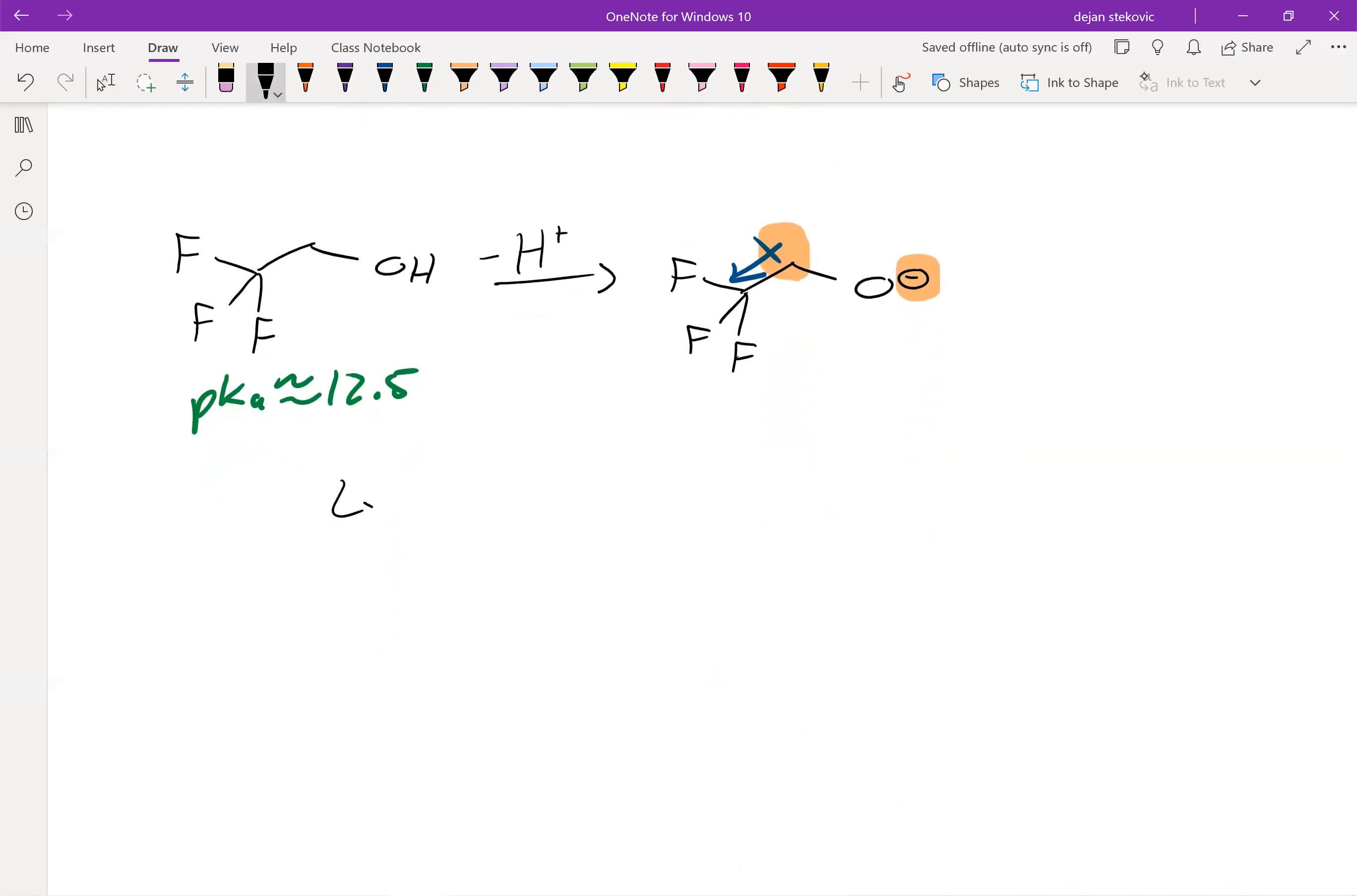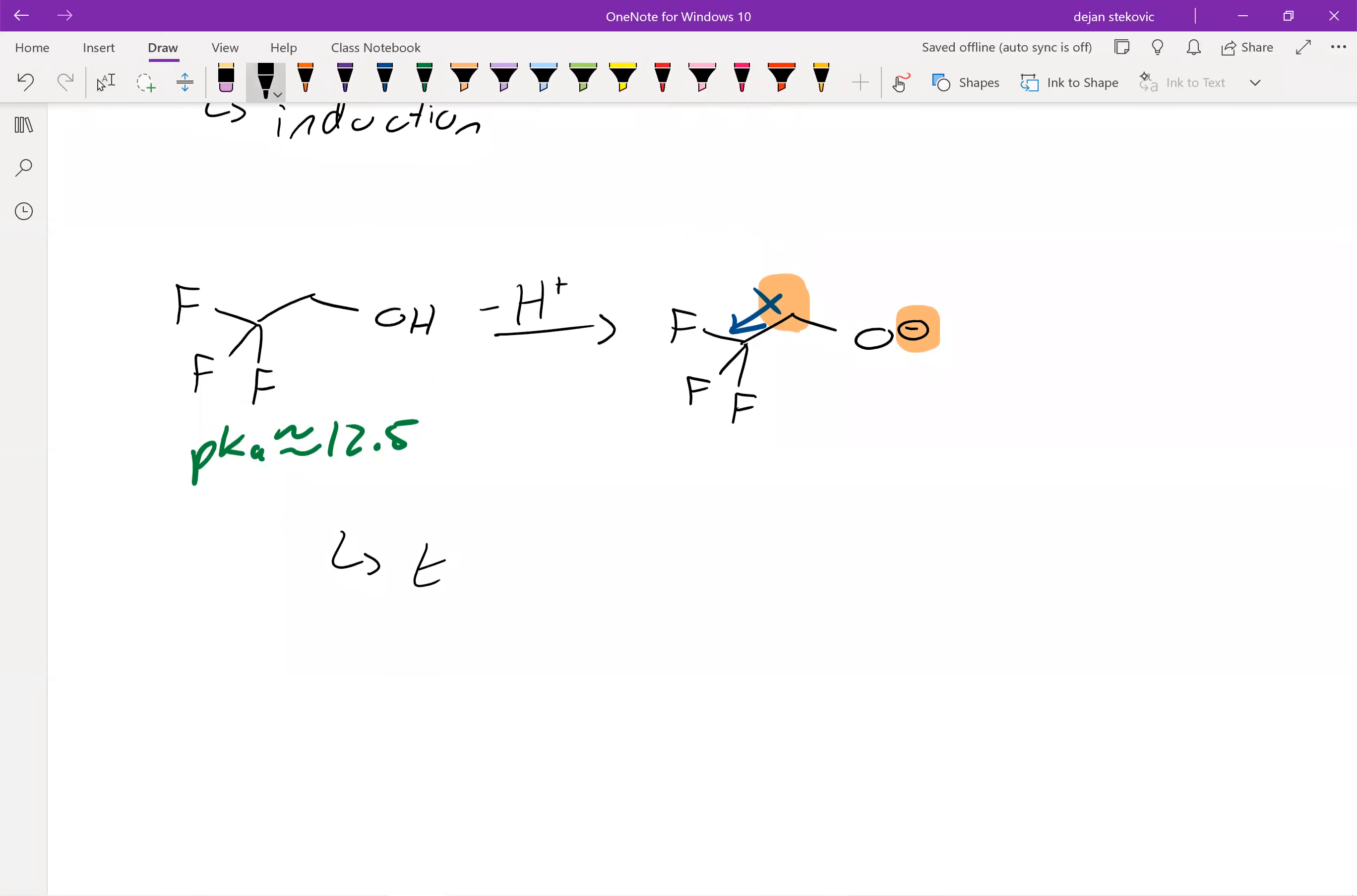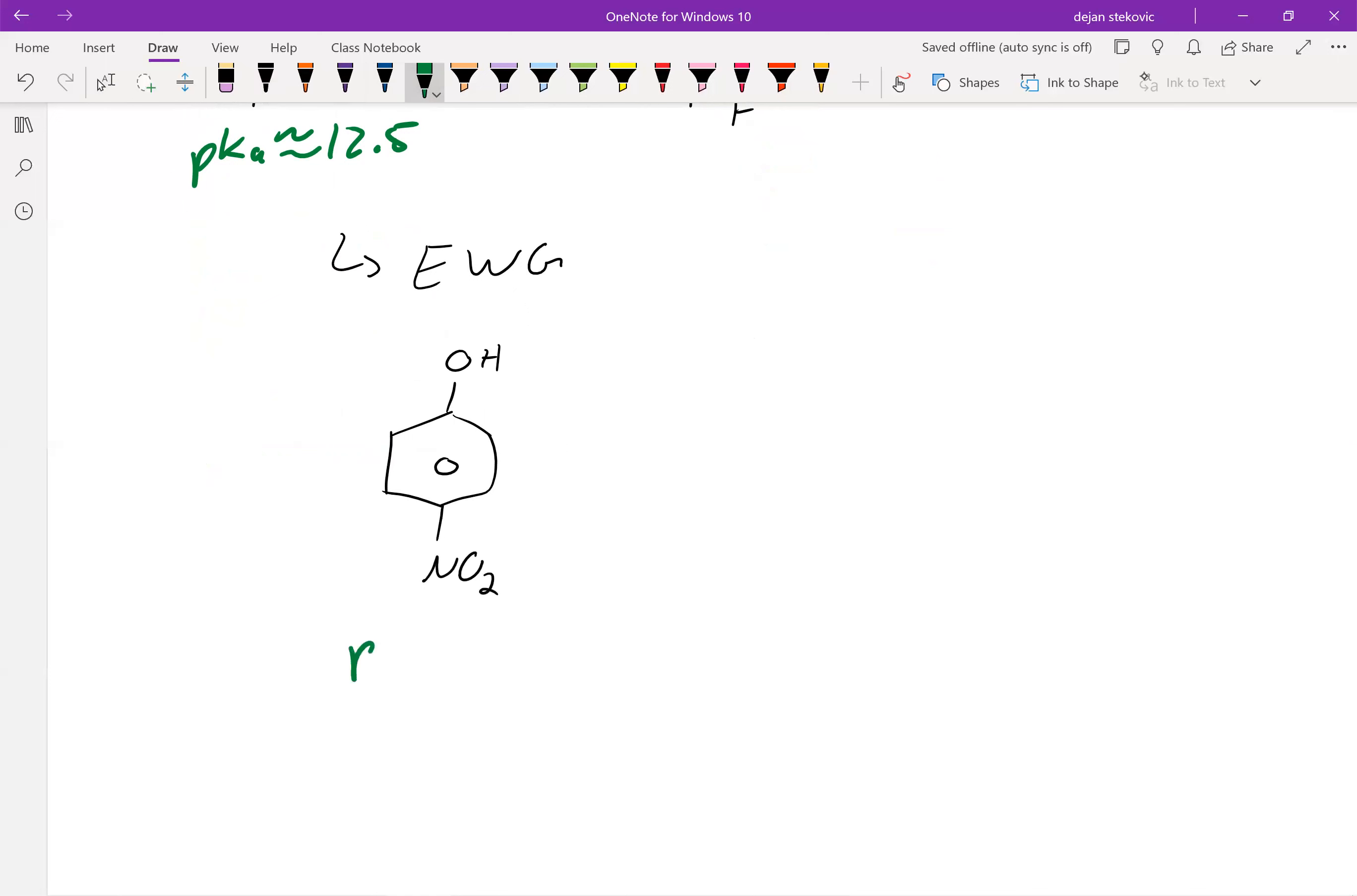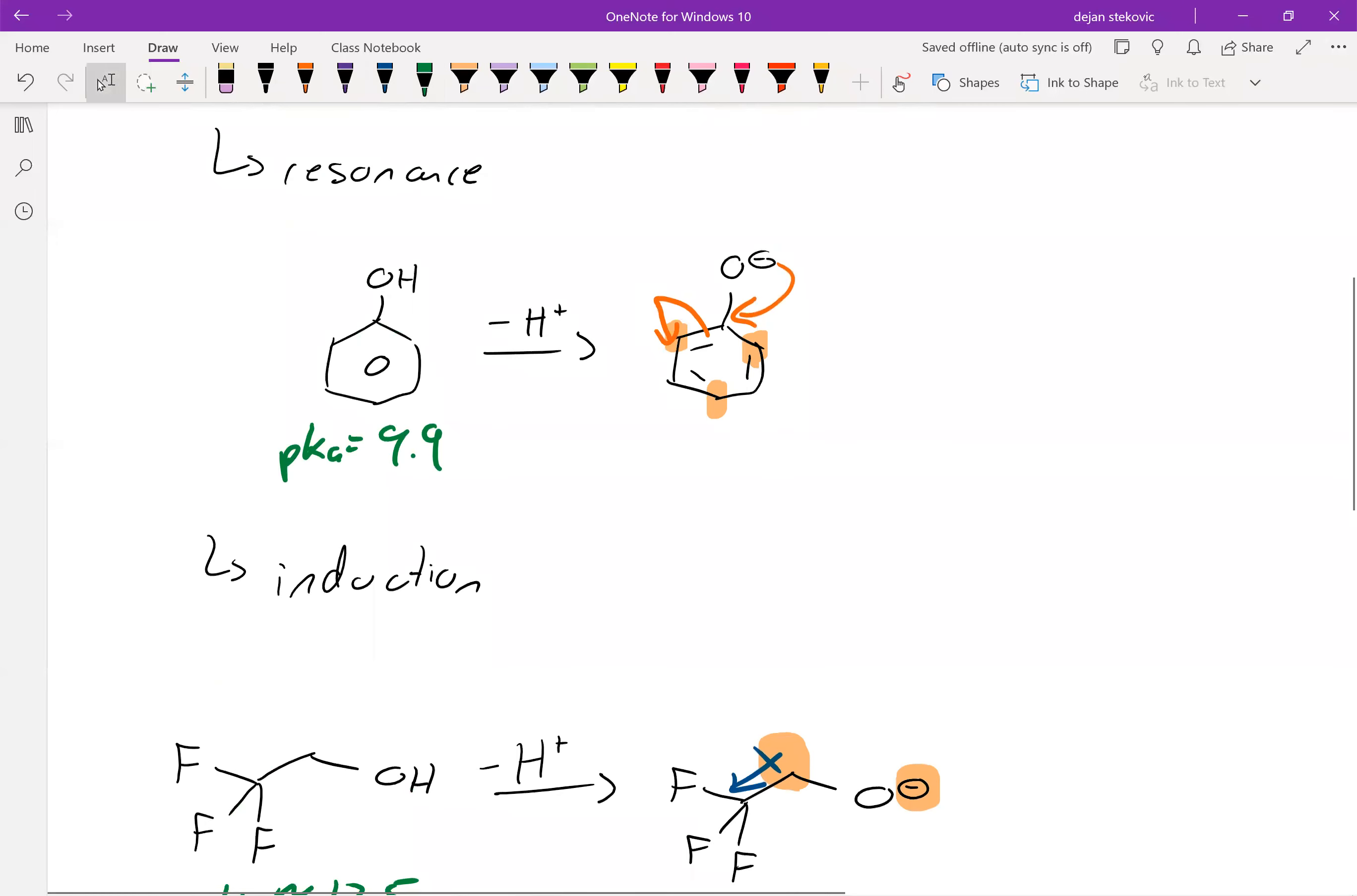And then similar to induction, we can also have electron withdrawing groups, which is very similar notion. So for example, if we have phenol with a nitro group attached, electron withdrawing group, this pKa goes all the way down to seven, much more acidic than even our regular phenol.